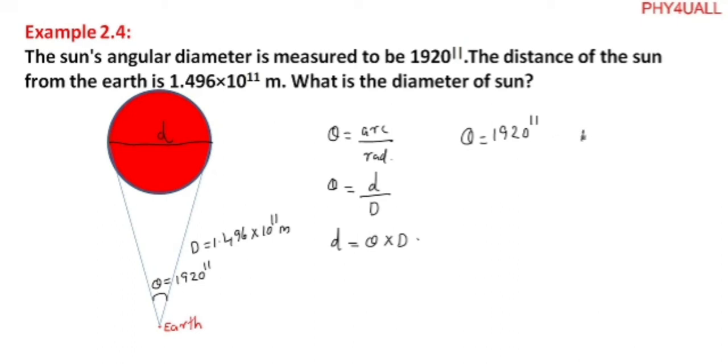We have already learned one second equals 4.85×10⁻⁶ radians. So what is theta? Theta equals 1920 × 4.85×10⁻⁶ radians.